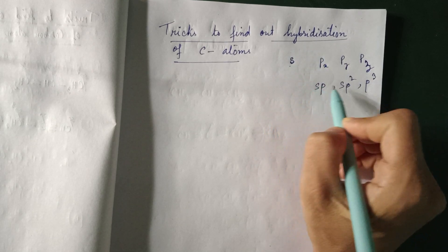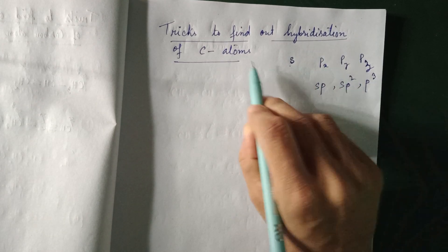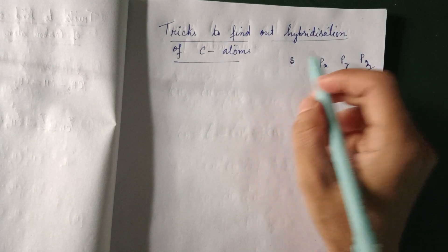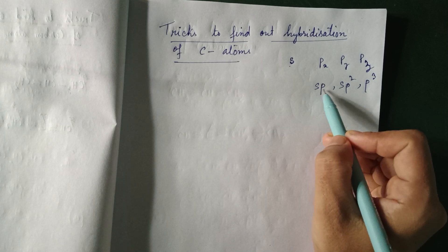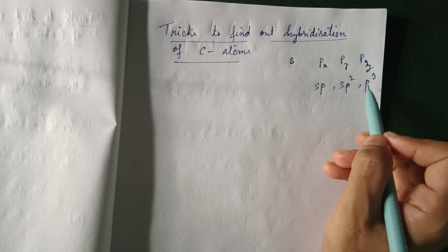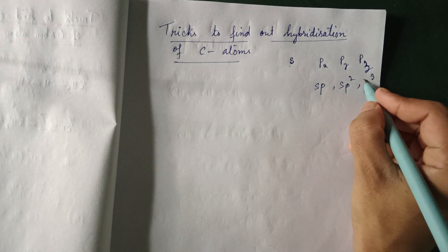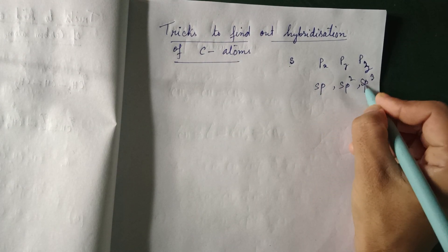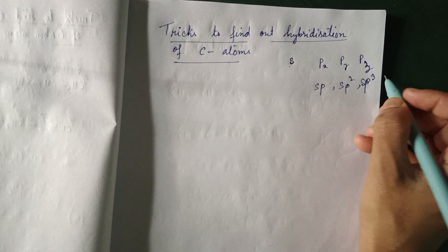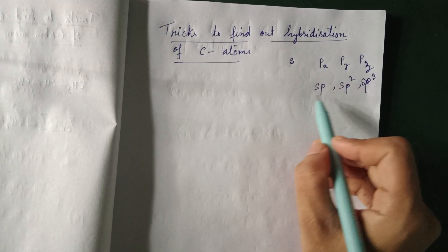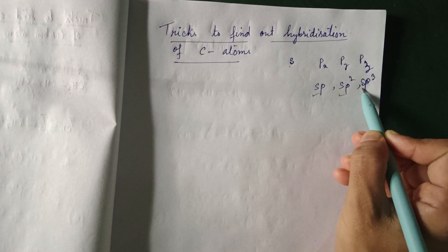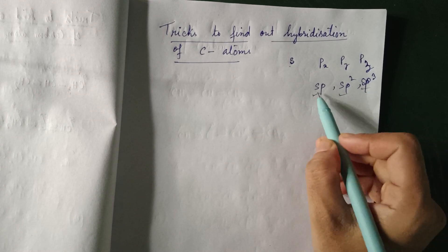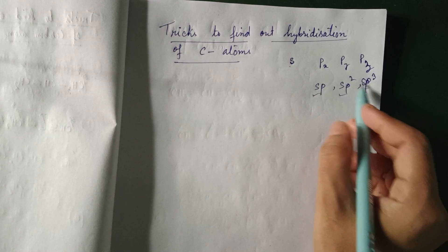We are going to talk about the hybridization of carbon atoms and we are going to deal with sp, sp2, and sp3. So we are going to determine which of these three applies in a given case.